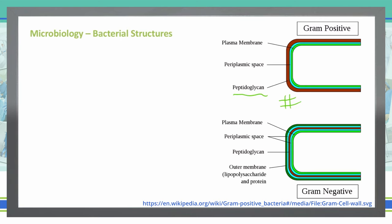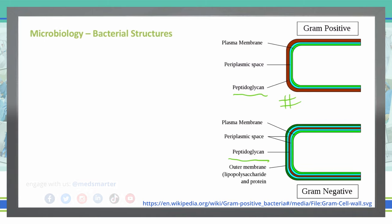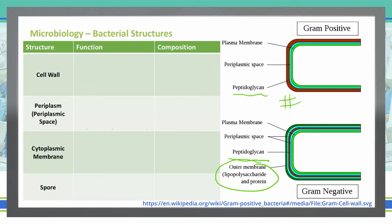Comparing that to a gram-negative: gram-negatives do have a peptidoglycan layer, as you can see in the middle of this figure. However, they also have an outer membrane on top of that peptidoglycan layer, which makes it more difficult to stain with certain stains — and we'll talk about that in just a little while. Let's look at the structure, function, and composition of each individual part of a bacterial cell.